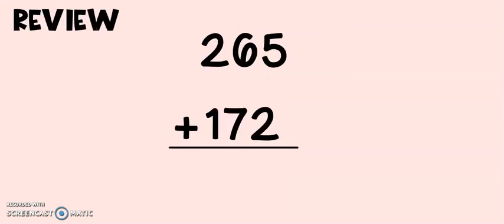Let's start with a quick review problem. In this problem you will see 265 plus 172. As we know when we have a three-digit number that means we have three different place values. We have the ones, the tens, and the hundreds.